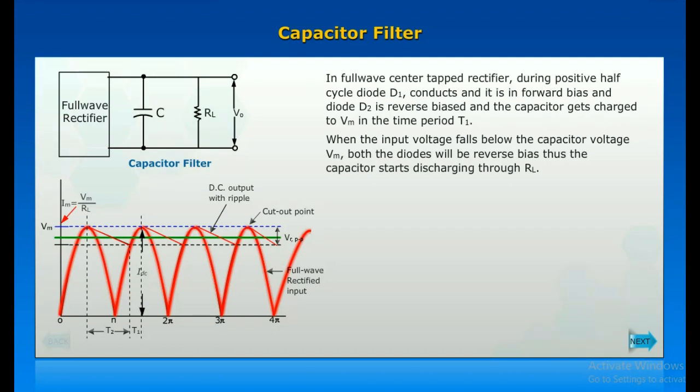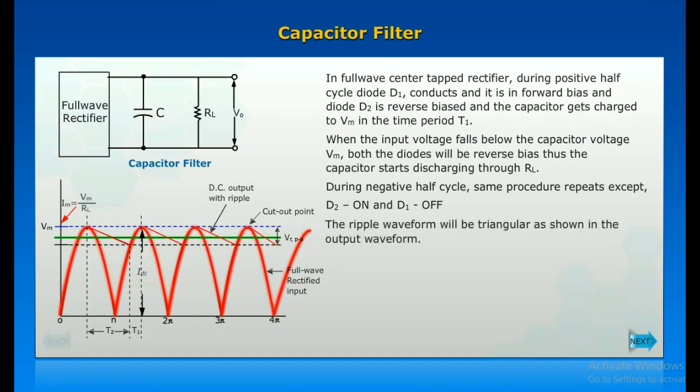During the negative half cycle, same procedure repeats except D2 is on and D1 is off. The ripple waveform will be triangular as shown in the output waveform.